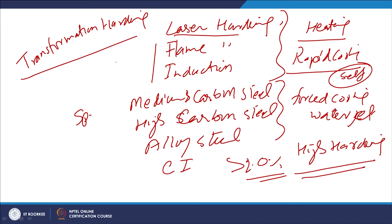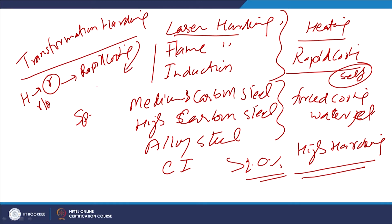Transformation hardening primarily involves heating for austenitizing — the transformation of soft phases such as ferrite and pearlite into austenite — followed by rapid cooling. Rapid cooling facilitates the transformation of austenite into martensite, which is harder than austenite and other soft phases like pearlite and ferrite, thereby improving surface hardness and mechanical properties.